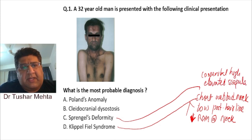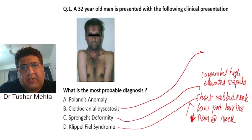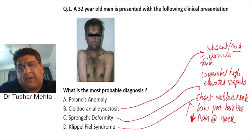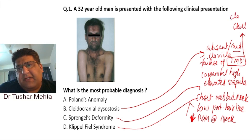Now, cleidocranial dysostosis and Poland's anomaly — let's talk about cleidocranial dysostosis first. This is basically an absent or rudimentary clavicle. Apart from that, there is failure of intramembranous ossification, which affects the skull, the clavicle, and the face as well.